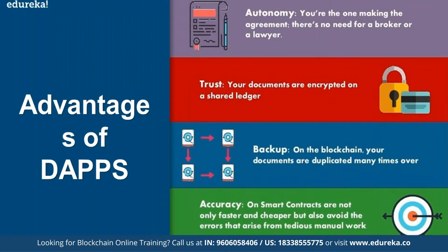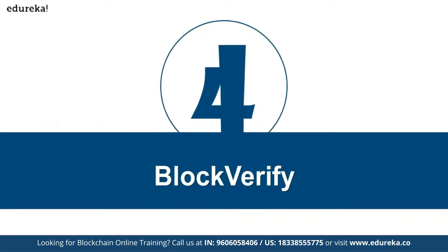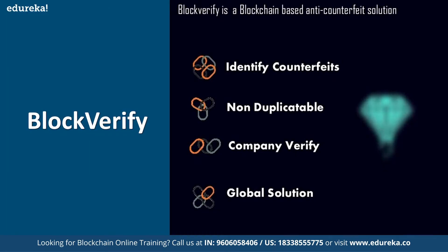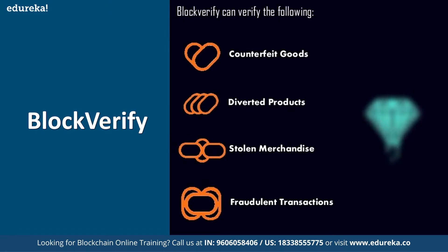You can take your backup and have a duplicate copy, but you cannot create a new one. The accuracy is going to be a hundred percent accurate. You'll also have a concept called block verify — what verify means is you can identify counterfeits, duplicates, or use company verification or global solutions. There are different types of verifications used by different technologies to build different applications. Counterfeit goods, diversified products, stolen merchandise, or fraudulent transactions can all be verified as part of the blockchain so these activities can be controlled very well.